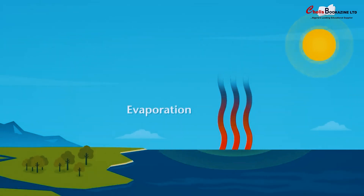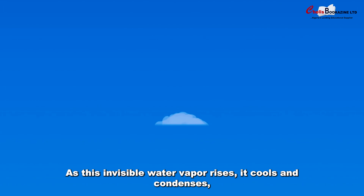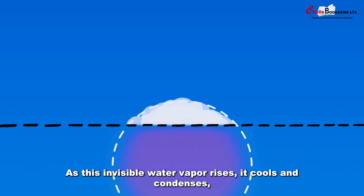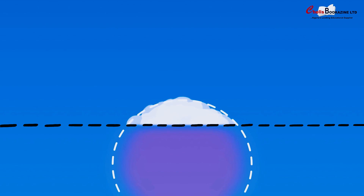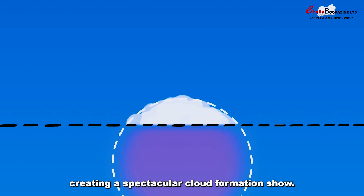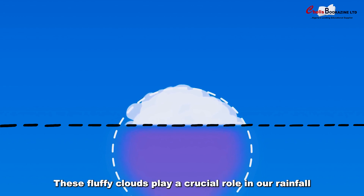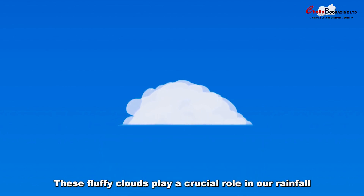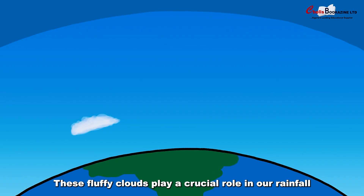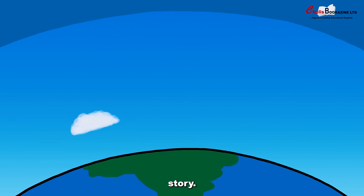We move to process number three: cloud formation. As this invisible water vapor rises, it cools and condenses, creating a spectacular cloud formation show. These fluffy clouds play a crucial role in our rainfall story.